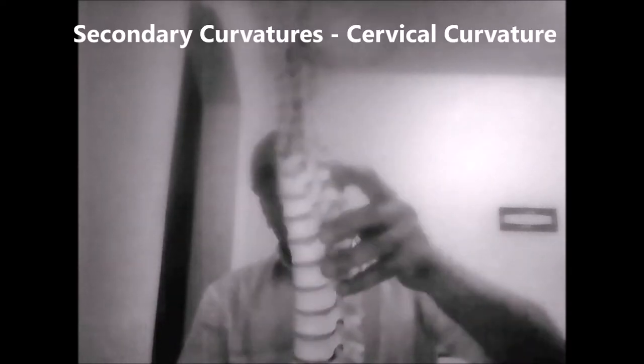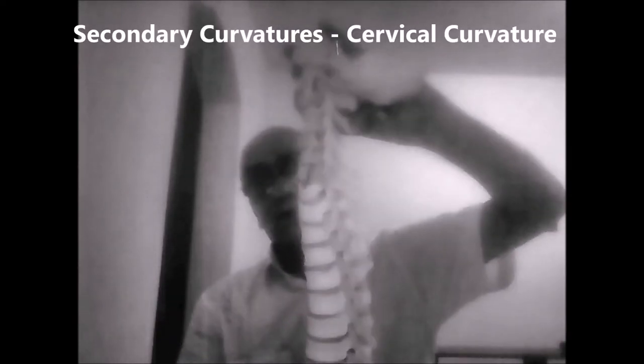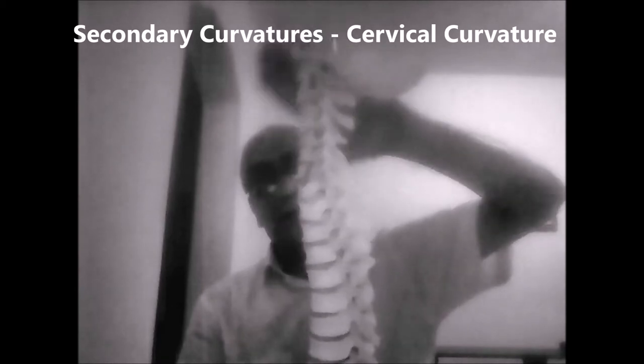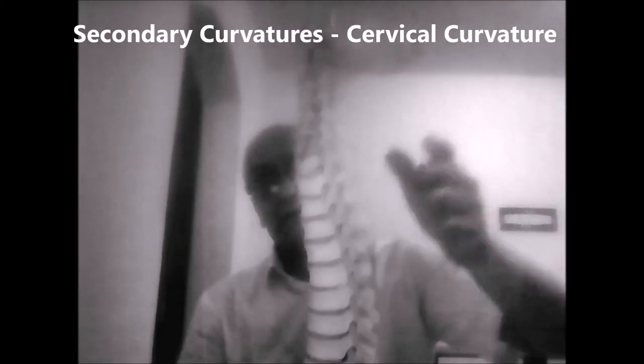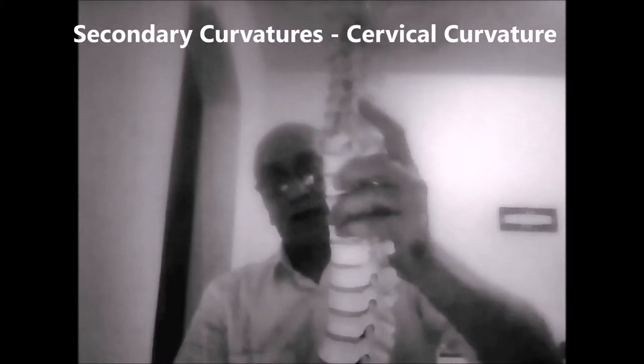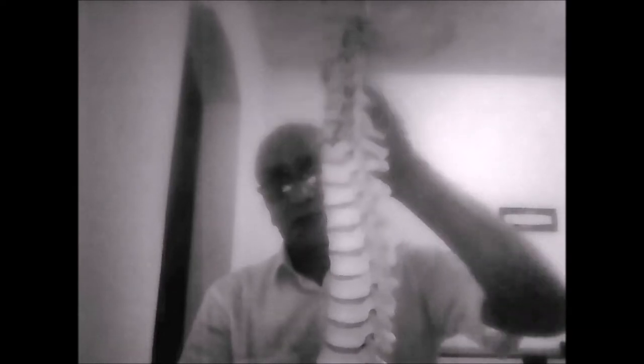In contrast, we have two secondary curvatures. Number one is the cervical curvature, which is in the direction opposite to that of the fetal curvature. This is because at the third month of age the child tries to raise the head up, and therefore the cervical spine bends in the opposite direction.